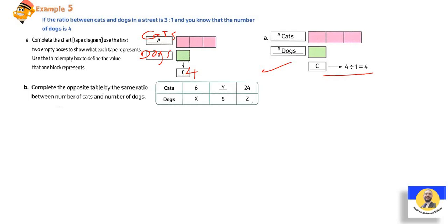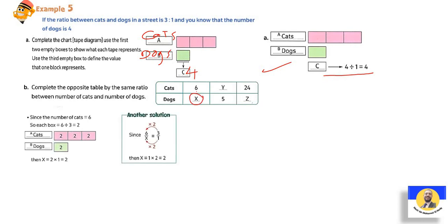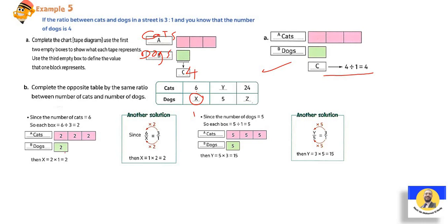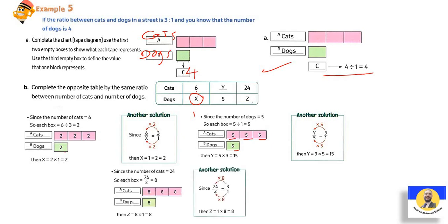The second: complete the opposite table by the same ratio between number of cats and number of dogs. When you have 3:1, and here 6, so 3 by what equals 6? 3 by 2. So 1 by 2 will be 2. So x will be 2. The second: y and 5. The number of dogs is 5, so here it will be 5, 5, 5. So 3 by 5 is 15. The next one: when you have 24 cats, 24 divided by 3 is 8. Each one will be 8. So the dogs also is 8. The answer is 8. Another way: I can do 3 over 1 equals 6 over x. We ask 3 by what equals 6? 3 by 2. So 1 by 2 equals 2. So x equals 2. I can do this normal method or by tape diagram.